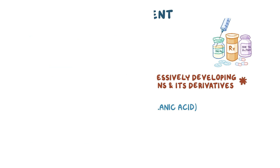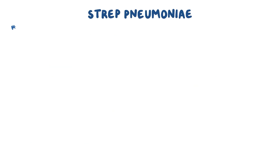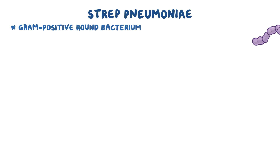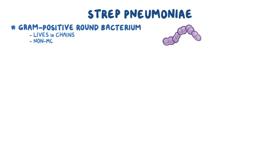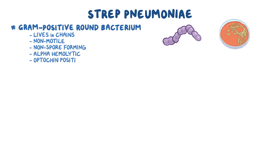Alright, as a quick recap: strep pneumoniae is a gram-positive, round bacterium that lives in chains. They're non-motile, non-spore-forming, alpha-hemolytic, and optocin-sensitive.